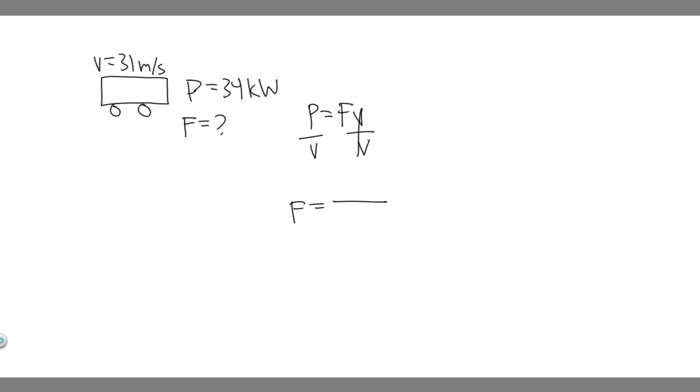So on the bottom we have the velocity, which is 31. On top we have 34 kilowatts. And if you want to convert it to watts, you just multiply by 1,000 because there's 1,000 watts for every kilowatt. So it's going to be 34,000 watts.